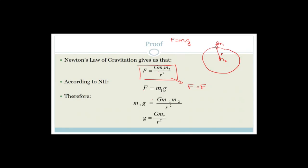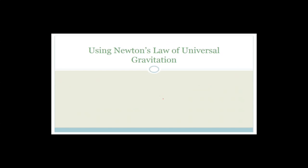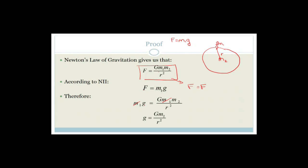The mass of the man is the same in both equations, so we can cancel it. Therefore, g — the acceleration due to the planet we're on — is independent of the mass of the object. It is determined only by the planet's mass and the distance from the center of the planet.